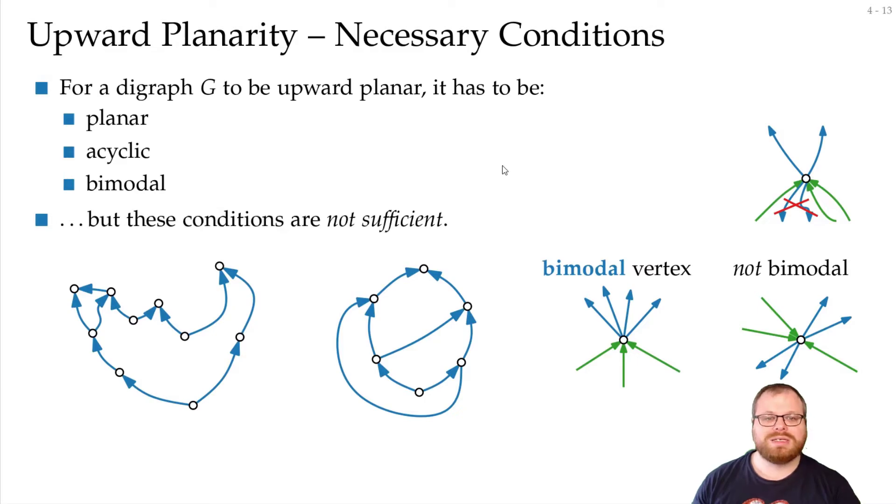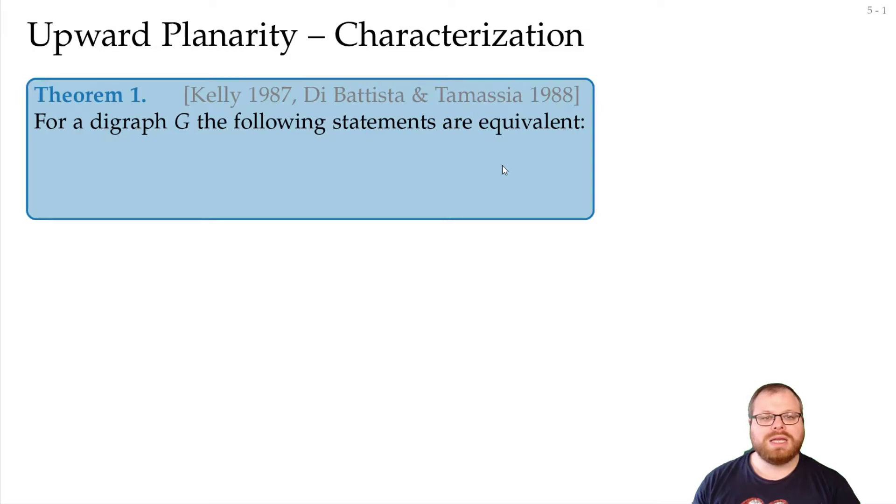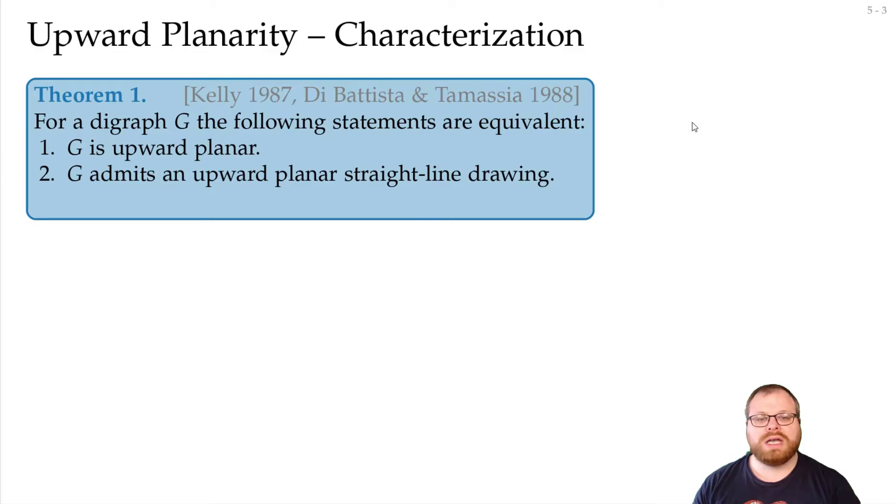So we have three necessary conditions. Unfortunately, these conditions are not sufficient, but we need a little bit more. In 1987, and independently in 1988, it was proven by Kelly and by Di Battista and Tamassia that the following three statements are equivalent: A graph is upward planar. It can be drawn upward planar with straight lines, so we don't even need curves. And the graph is the spanning subgraph of a planar ST-digraph.